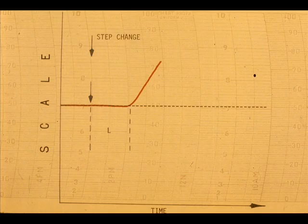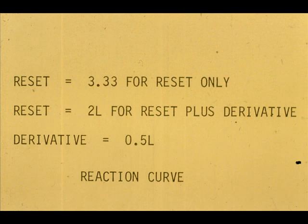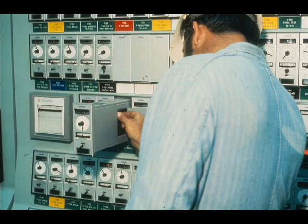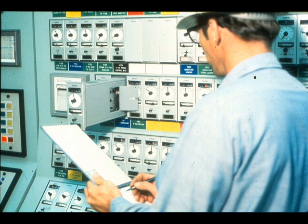The reaction curve tuning method causes the least upset to the process. If we have time to get nothing more than the time for the open-loop response, we can calculate the proper reset and derivative time and adjust accordingly. The open-loop response can be timed reasonably well with an ordinary watch — a stopwatch is better. The proportional band can then be adjusted experimentally with the controller back in service. Once proper tuning adjustments are determined, record them for future use.